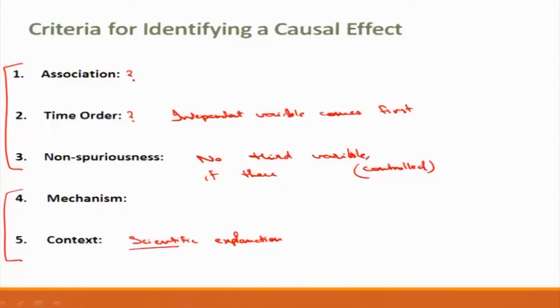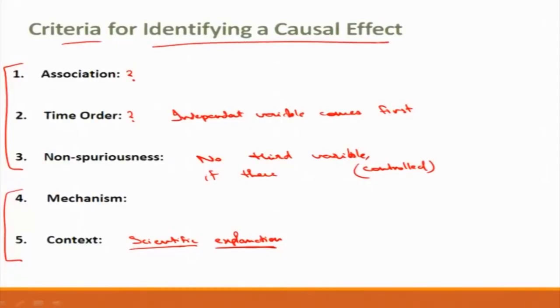Additionally, we consider mechanism and context: a scientific explanation or theory behind the correlation we observe. For example, time spent studying and grades are positively correlated because more study leads to more knowledge and better exam performance — there is clear context. In manufacturing, the change in surface roughness with cutting speed has physics behind it, and that context supports the correlation coefficient we obtain.